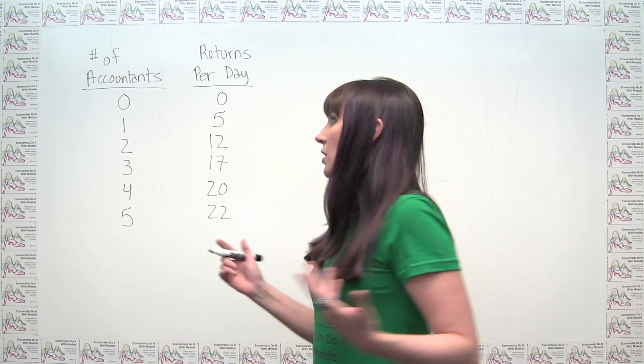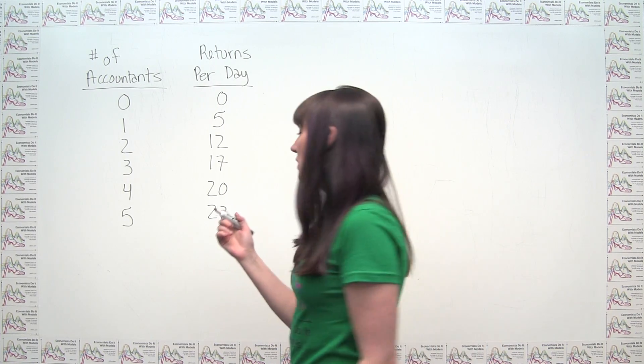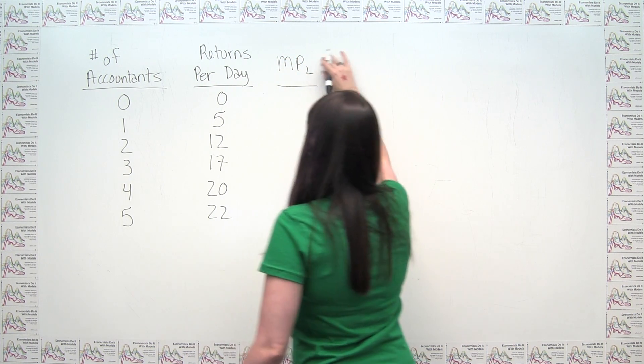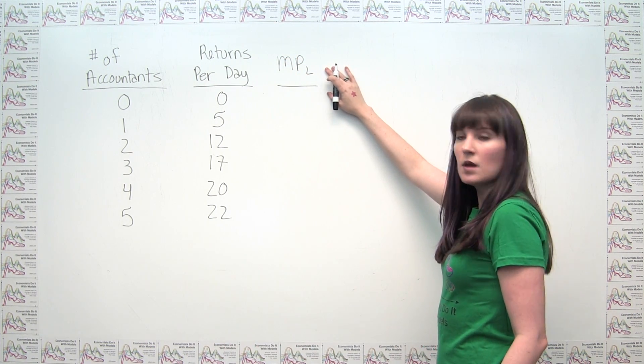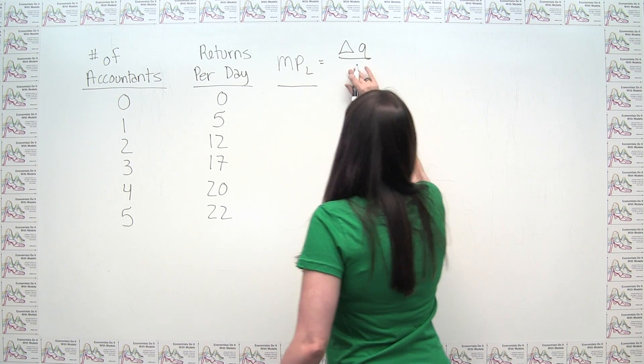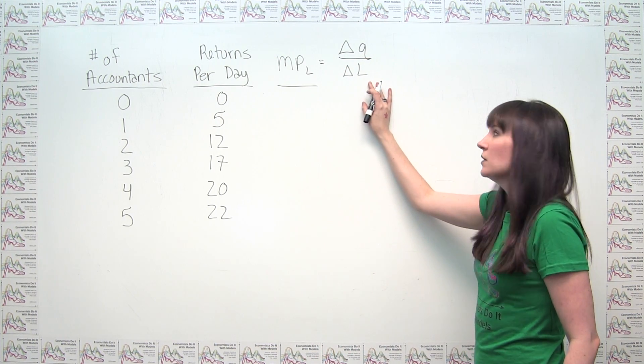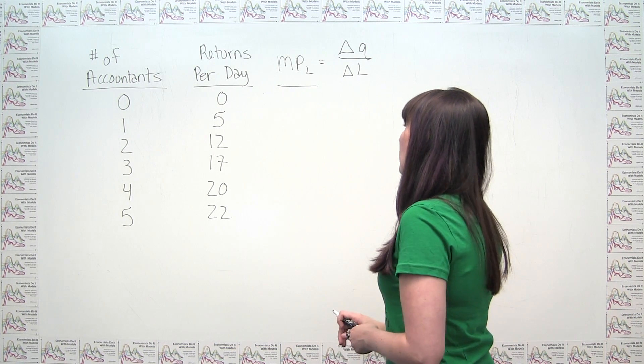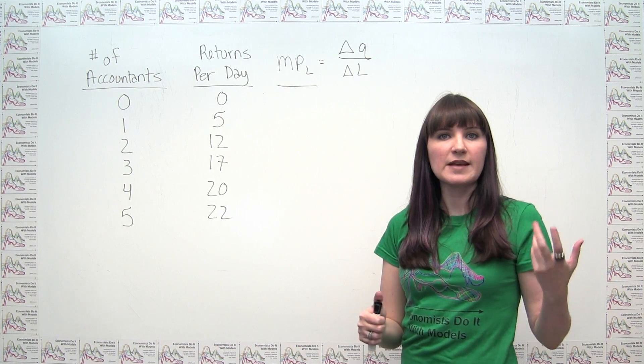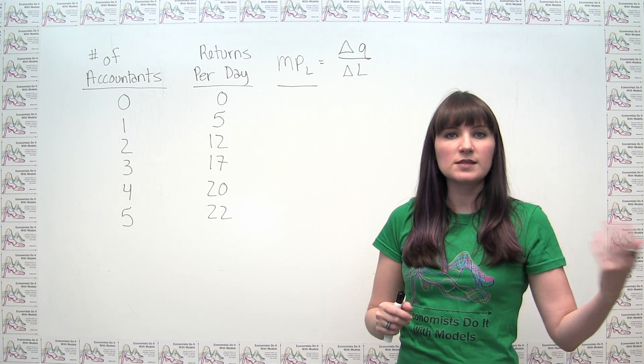We have what's called the marginal product of labor, or the marginal product of each accountant. The marginal product of labor, MPL, mathematically is the change in quantity of output divided by the change in labor input. Intuitively, the marginal product of labor is how much that last unit of labor contributed to output, or how much incremental output was produced because that last guy was added.